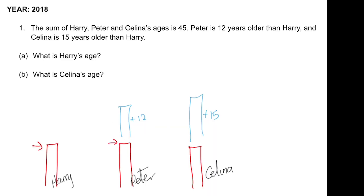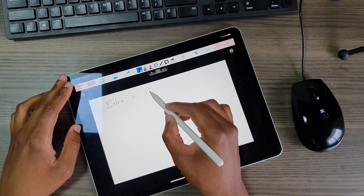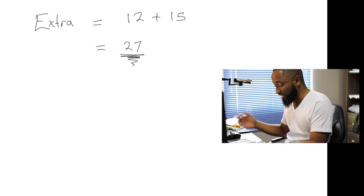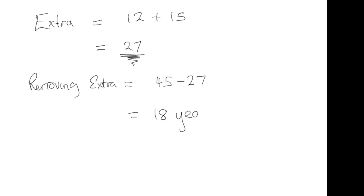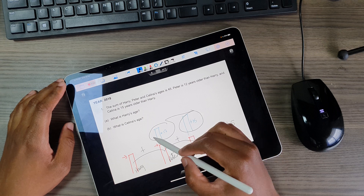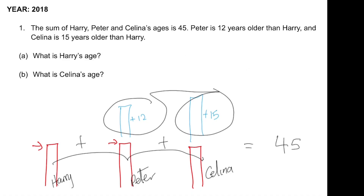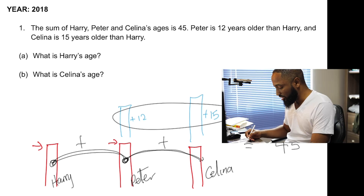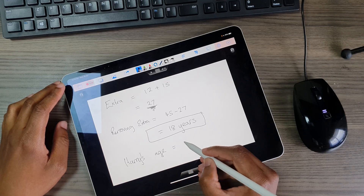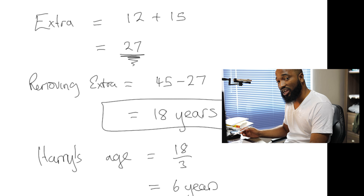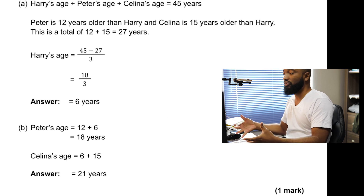I want to remove that extra. In all, they add up to 45, but the extra years that Peter and Selina have on Harry is 12 and 15 — that's 27 years combined. So if I remove this from 45, I get 18 years. That 18 years represents three times Harry's age, because the 12 and 15 are just extra years Peter and Selina have on Harry. Dividing 18 by 3 gives me Harry's age: 6 years. To find Selina's age, I add back her additional 15 years to get 21.